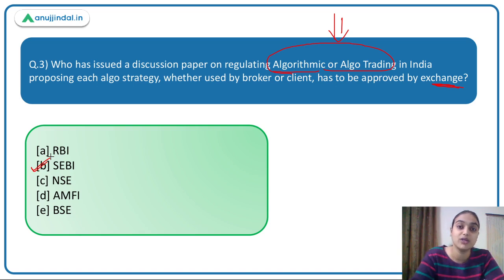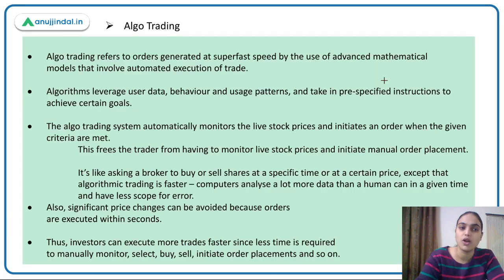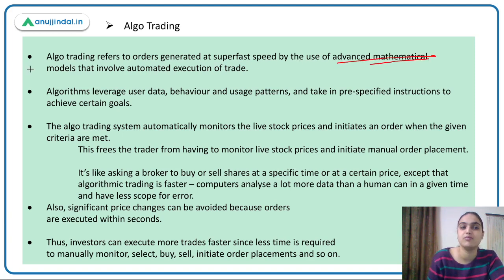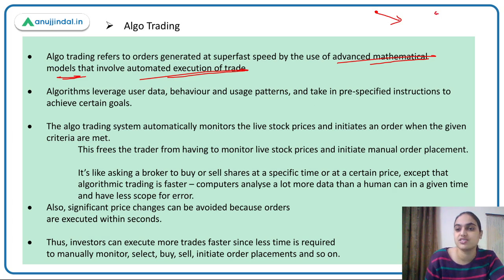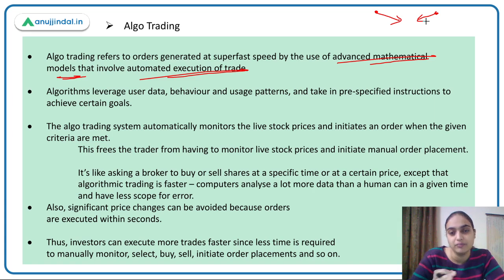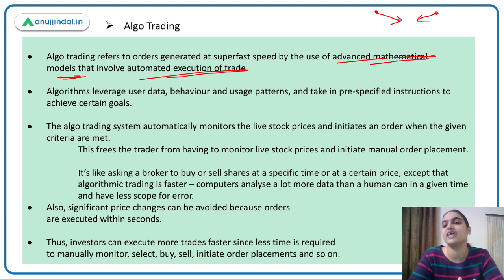Let's discuss algo trading and what SEBI proposes. Recently, SEBI came up with a discussion paper on regulating algo trading in India. Algo trading refers to orders generated at super-fast speed using mathematical models involving automated execution of trades. For example, you may want a security sold if its price reaches a certain level. If you manually call a broker, prices might change by then. With algo trading, pre-specified instructions execute the trade automatically when the target price is reached.